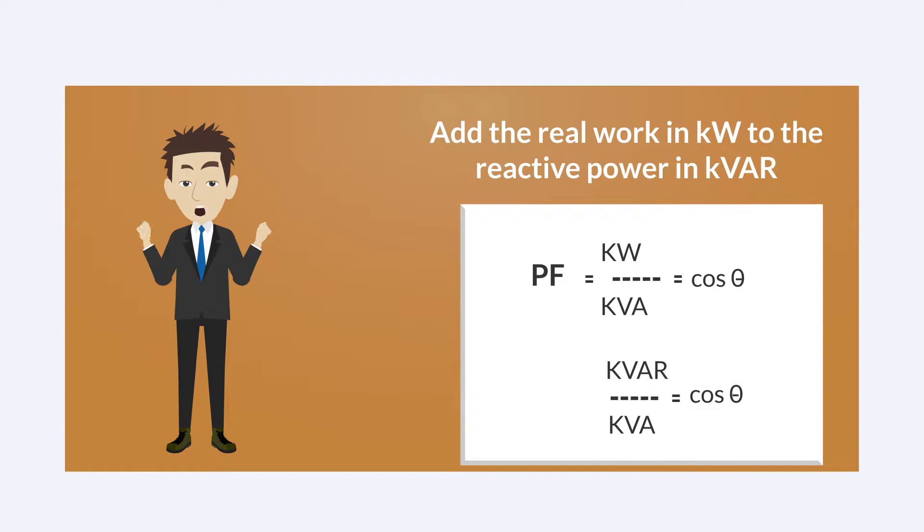If you add the real work in KW to the reactive power in KVAR by doing a vector sum, you end up with the KVA, or apparent power.